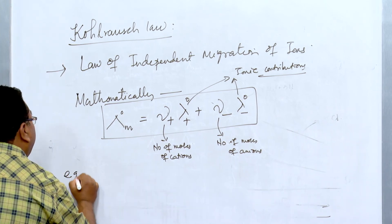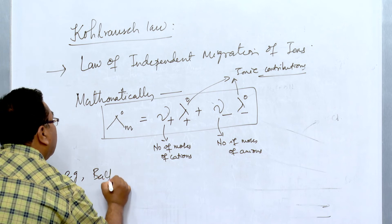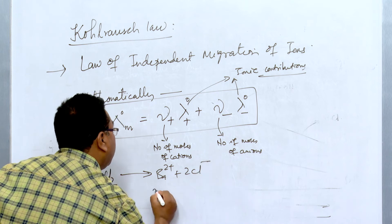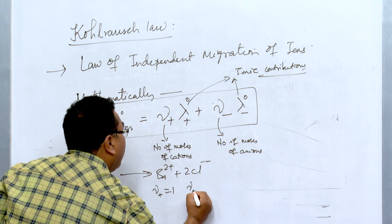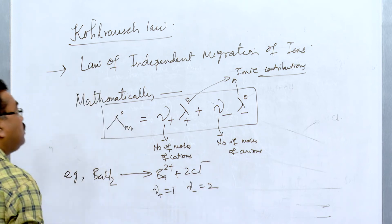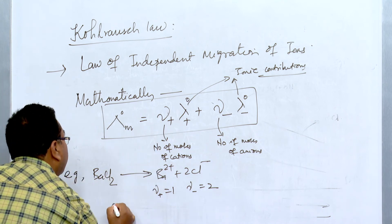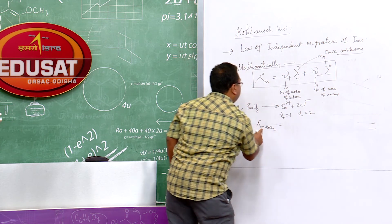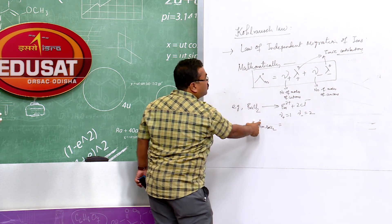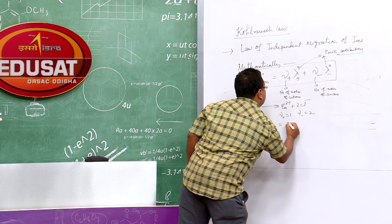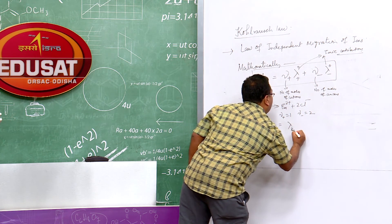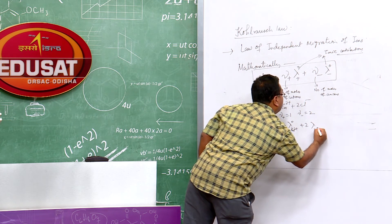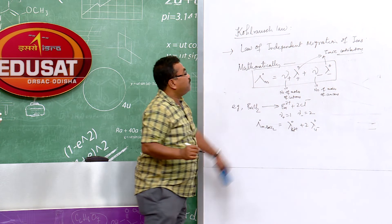For example, barium chloride ionizes as: BaCl₂ → Ba²⁺ + 2Cl⁻, so ν₊ = 1 and ν₋ = 2. The molar conductivity of BaCl₂ at infinite dilution equals: λ⁰(BaCl₂) = λ⁰(Ba²⁺) + 2λ⁰(Cl⁻).